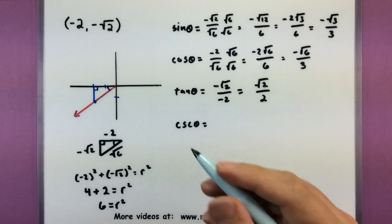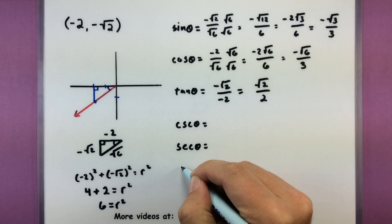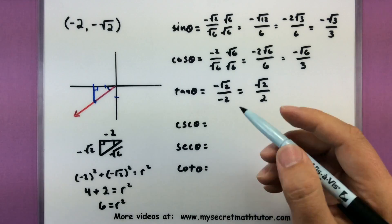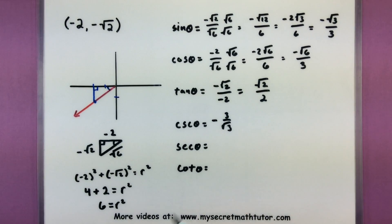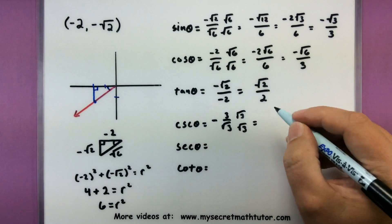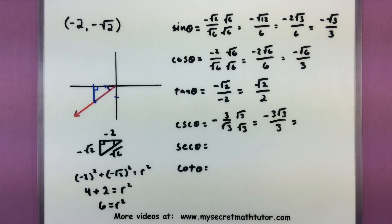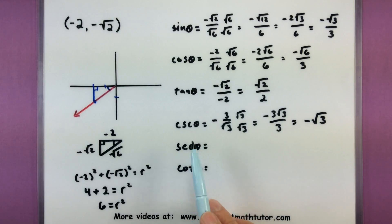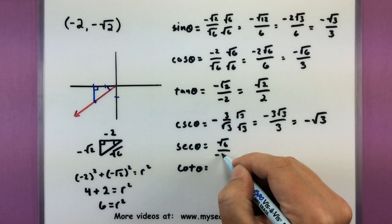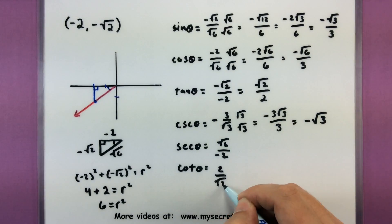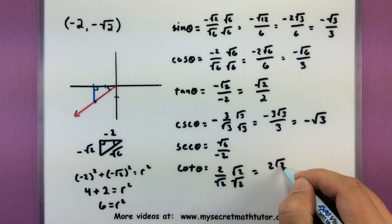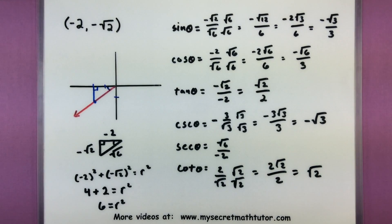The next three are almost freebies — all you have to do is flip over the first three, find their reciprocals, and you're good to go, though we'll still have to rationalize some denominators. Flipping sine gives negative three over the square root of three; rationalizing by multiplying by the square root of three and canceling the extra three gives negative square root of three — that's cosecant. For secant, working with the original sides gives square root of six over negative two. For cotangent, flipping tangent gives two over the square root of two; rationalizing and canceling the extra twos gives square root of two.